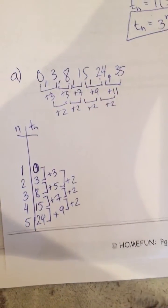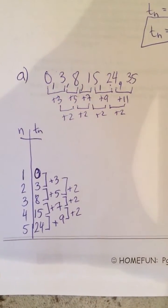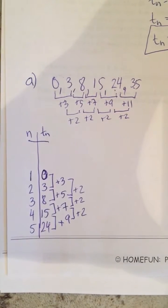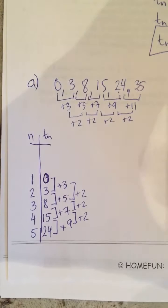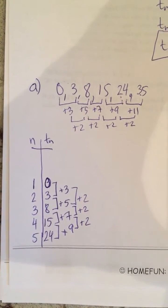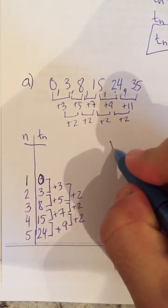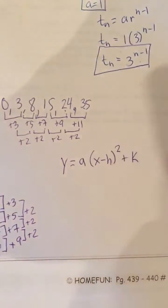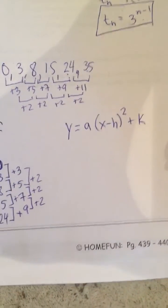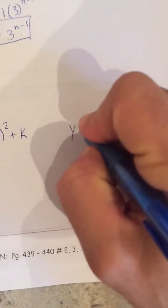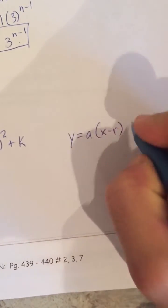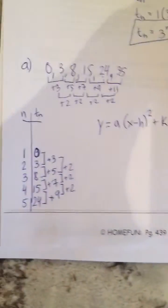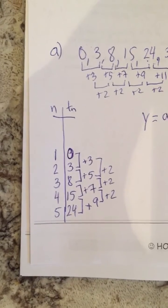Since this is a parabola, we need a formula. Standard form is difficult to derive from the table. Vertex form y = a(x − h)² + k is useful if we know the vertex. Alternatively, x-intercept form y = a(x − r₁)(x − r₂) works if both intercepts are known. We need to work backwards to find either the vertex or the x-intercepts.